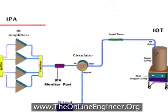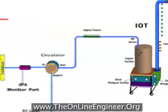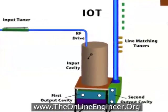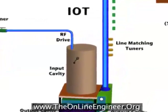Part 1 covers the transport stream, the digital exciter, and the intermediate power amplifiers.